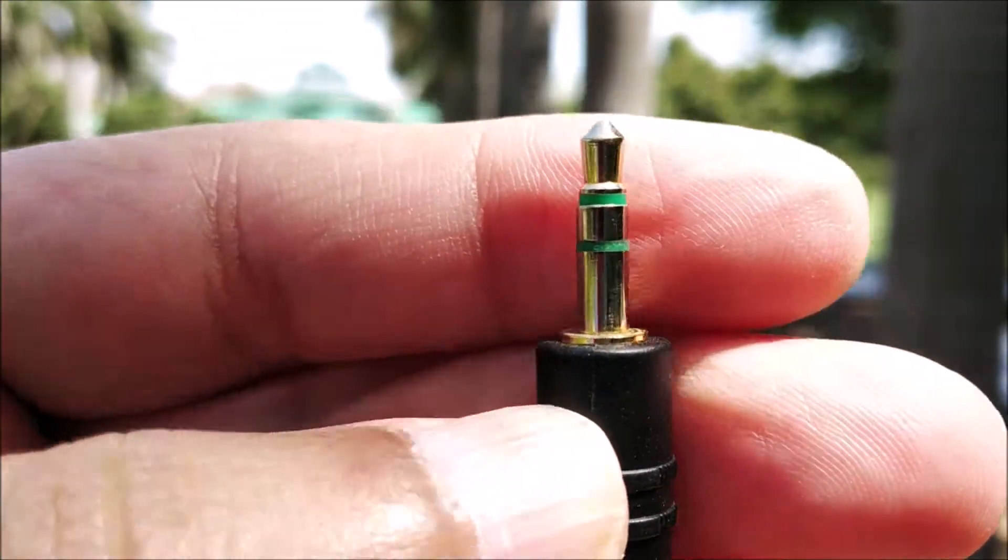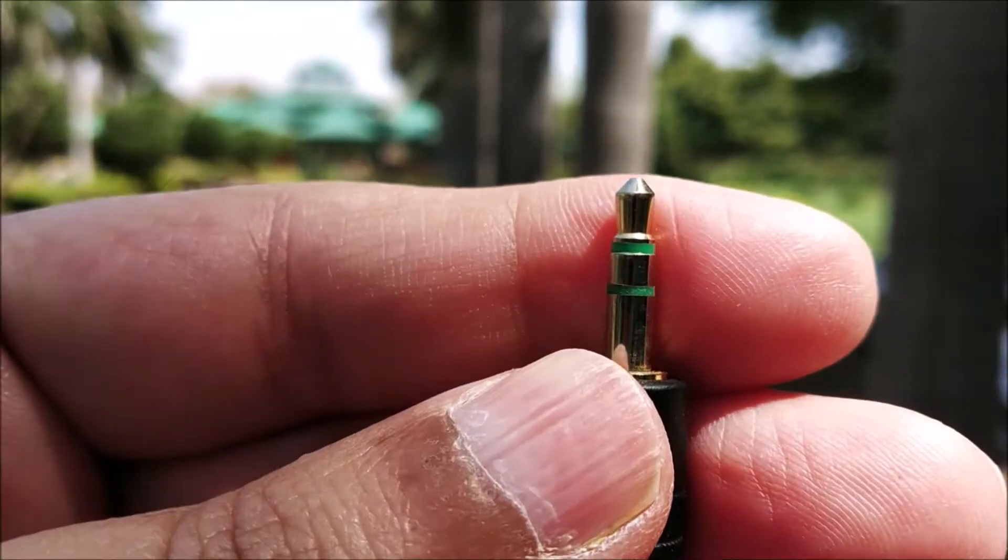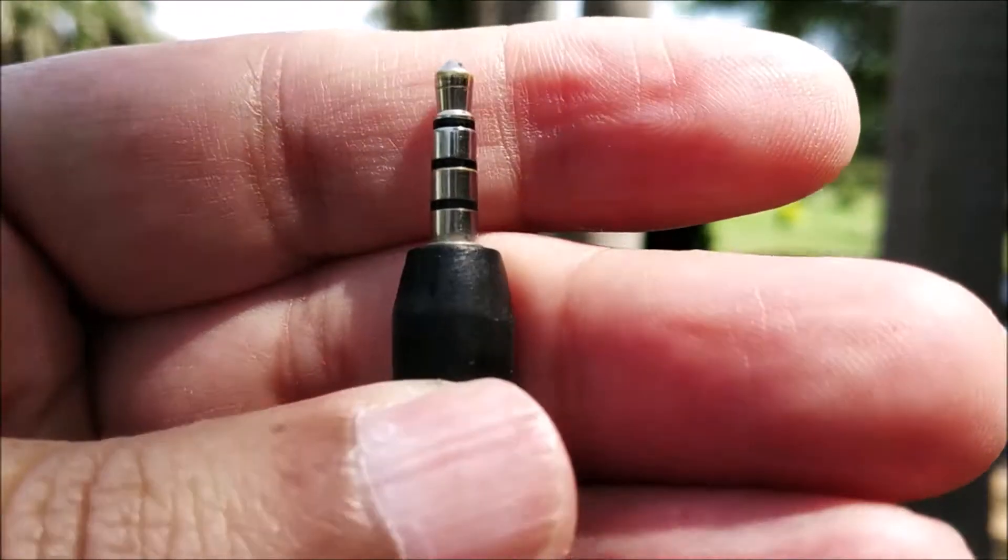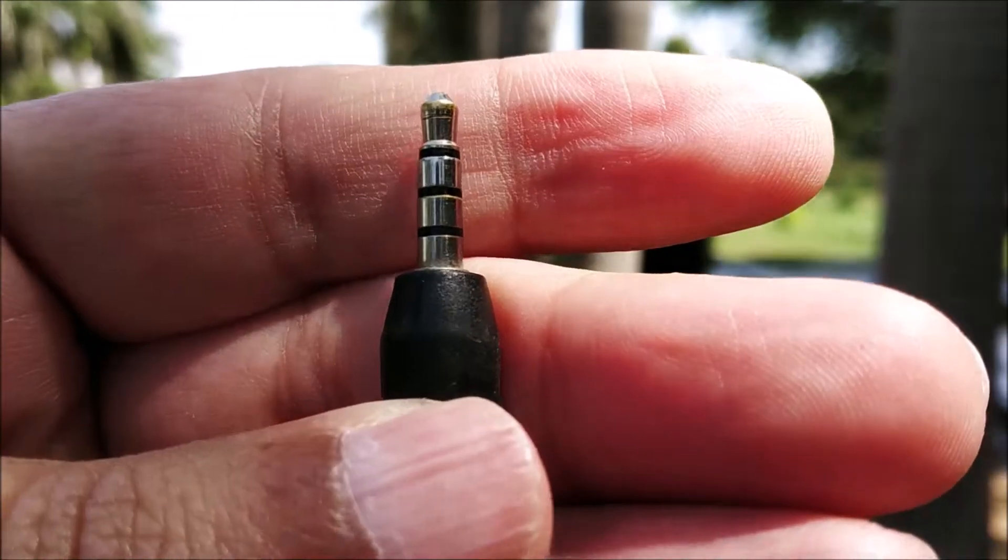Now do you ever wonder why there are two rings here? Let's look at another one. So let's look at this one. This has three rings, black ones they are. What is the mystery behind these rings? We'll solve this mystery in just a bit. Let's get started.